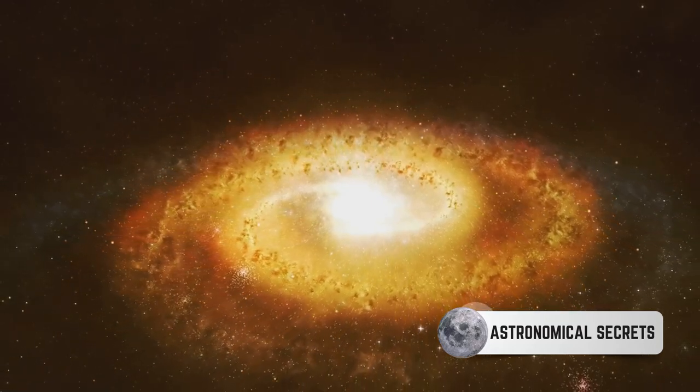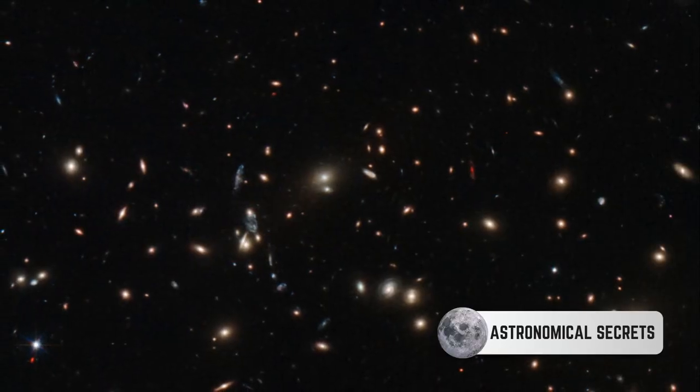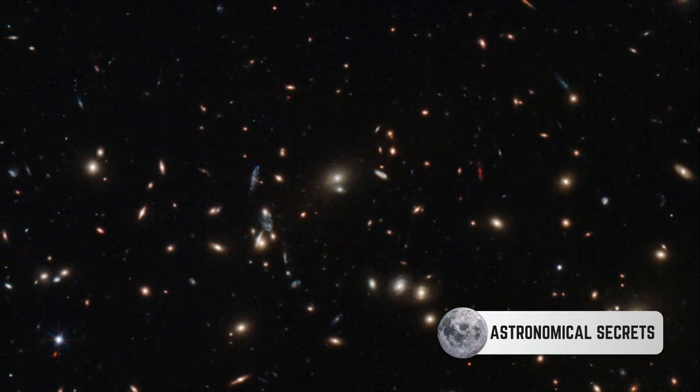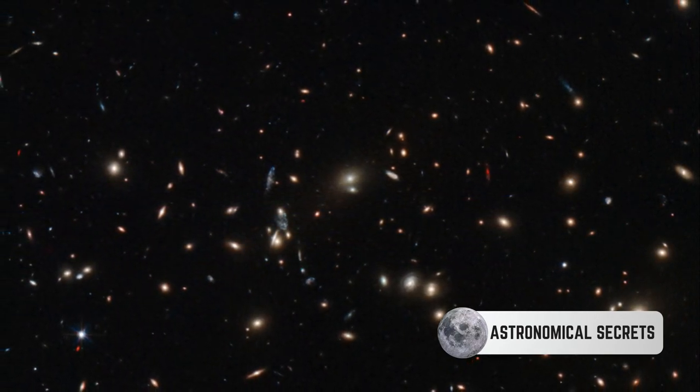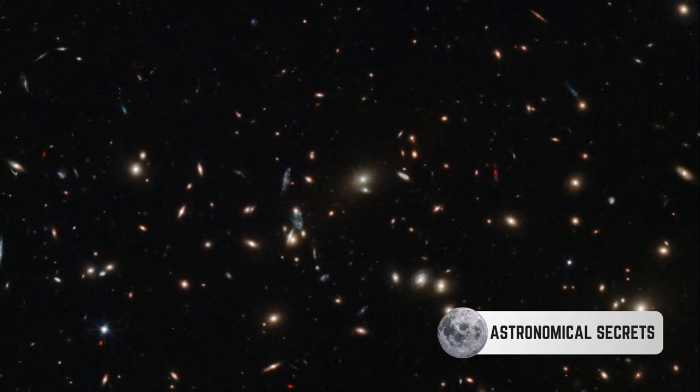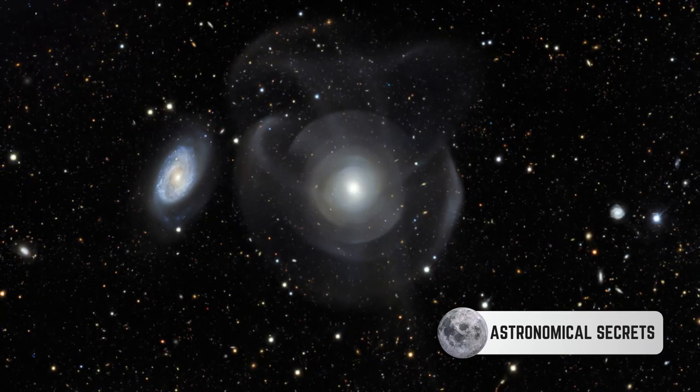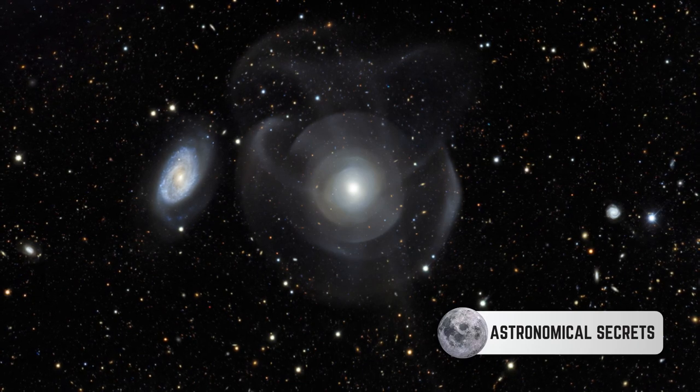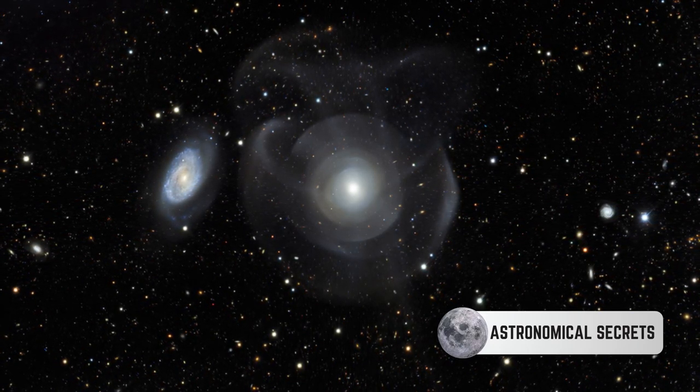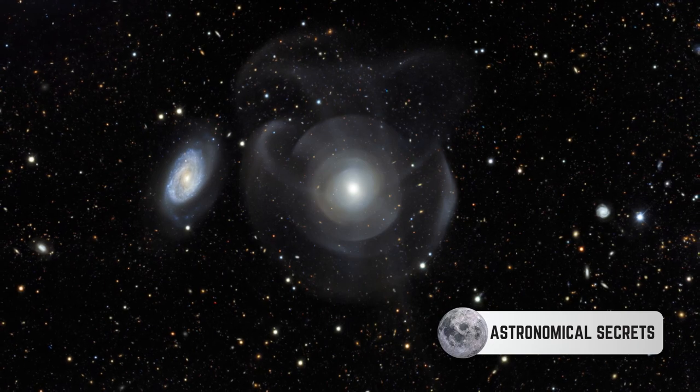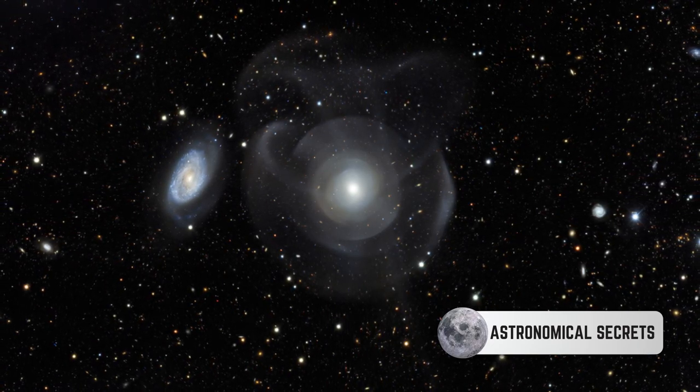But what fills that space? Well, elliptical galaxies are brimming with older stars. Unlike their spiral siblings, these galaxies don't have the spiral arms that we often associate with galaxies. These arms are the birthplaces of new stars, meaning elliptical galaxies aren't producing many new stars. Instead, they're filled with mature stars that have been around the cosmic block a few times.